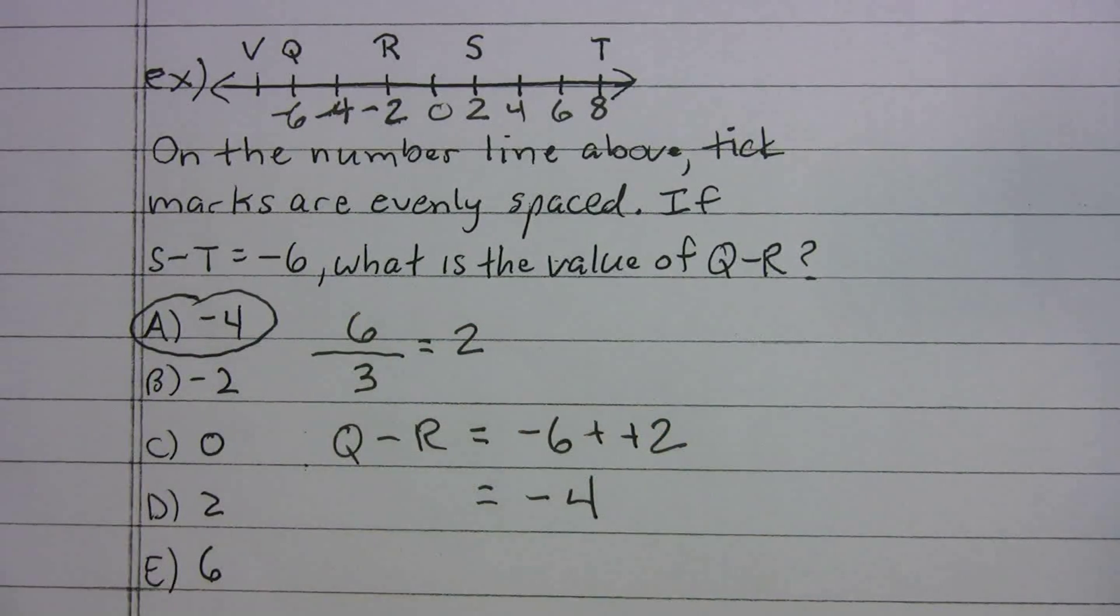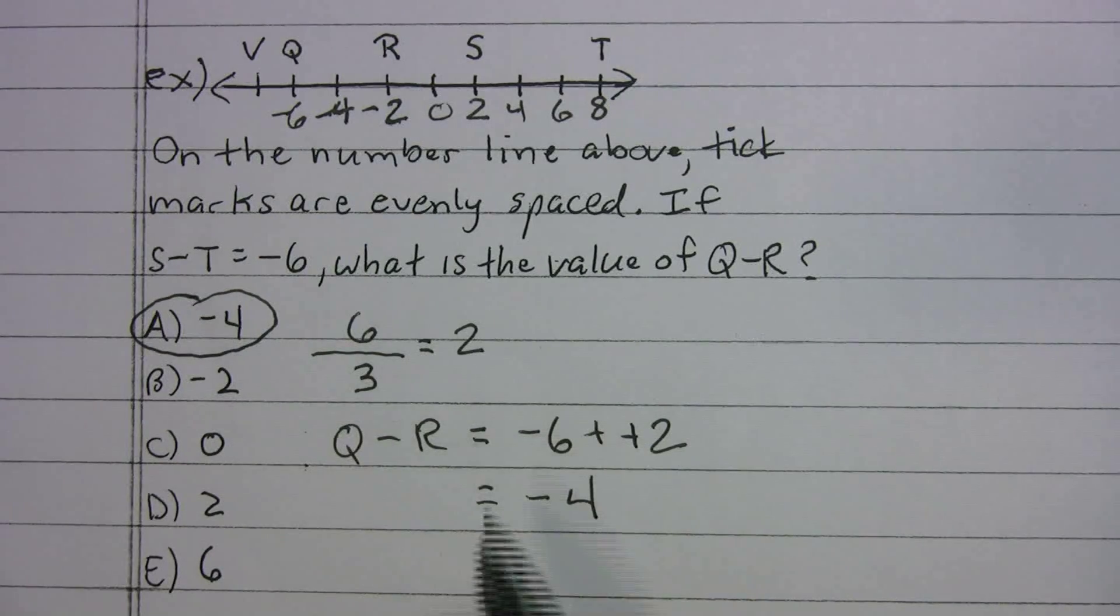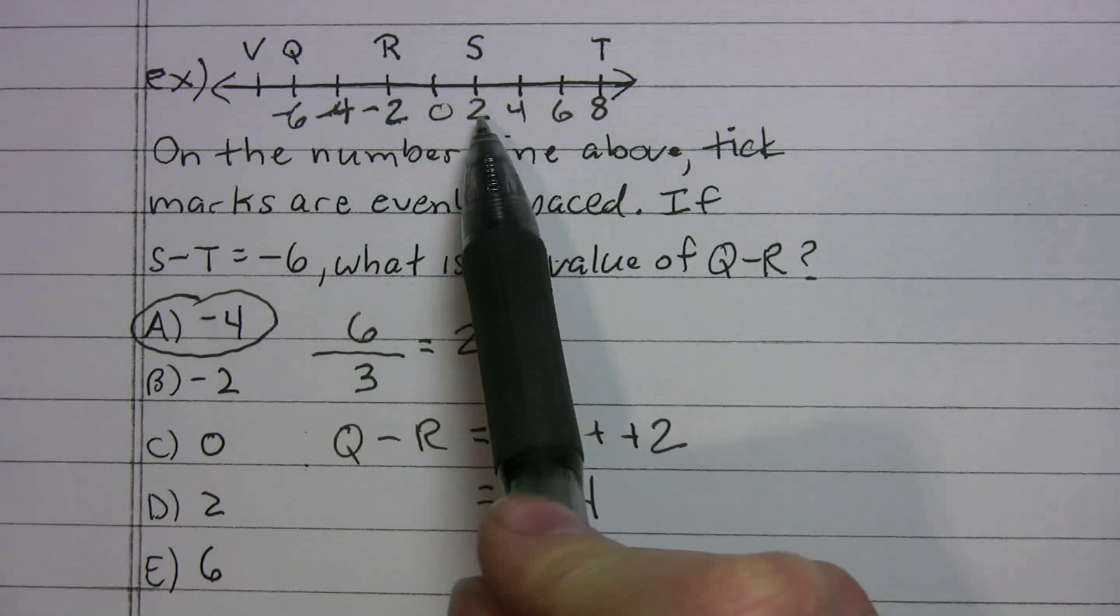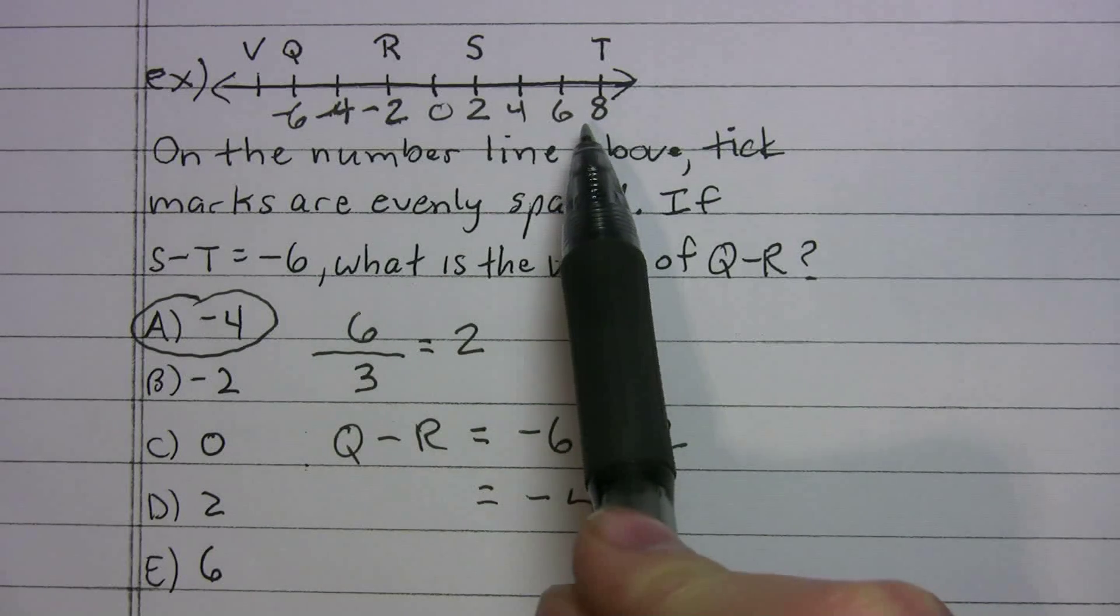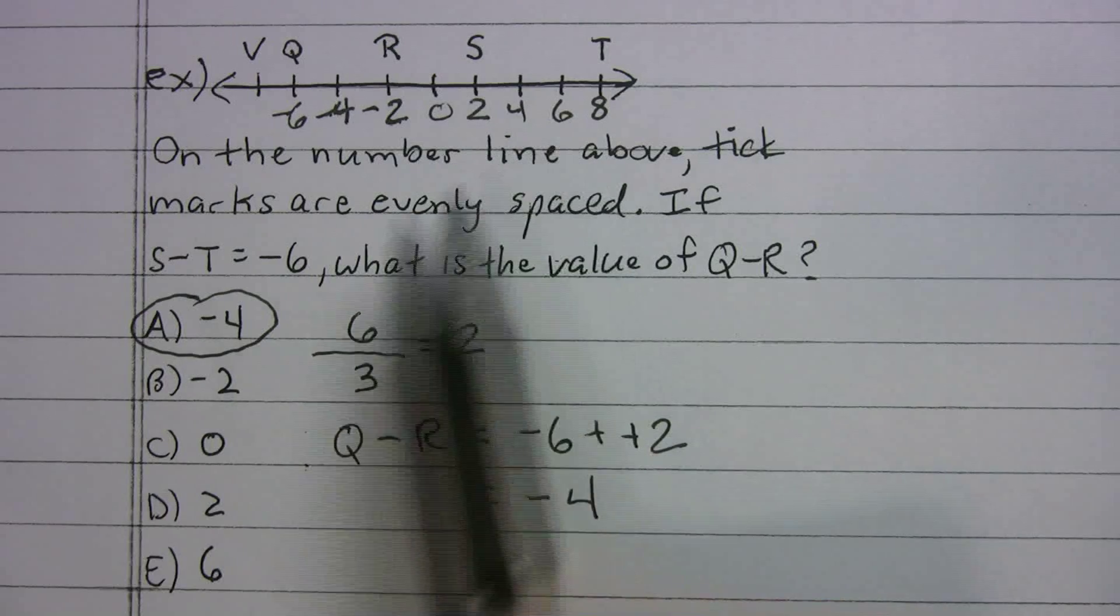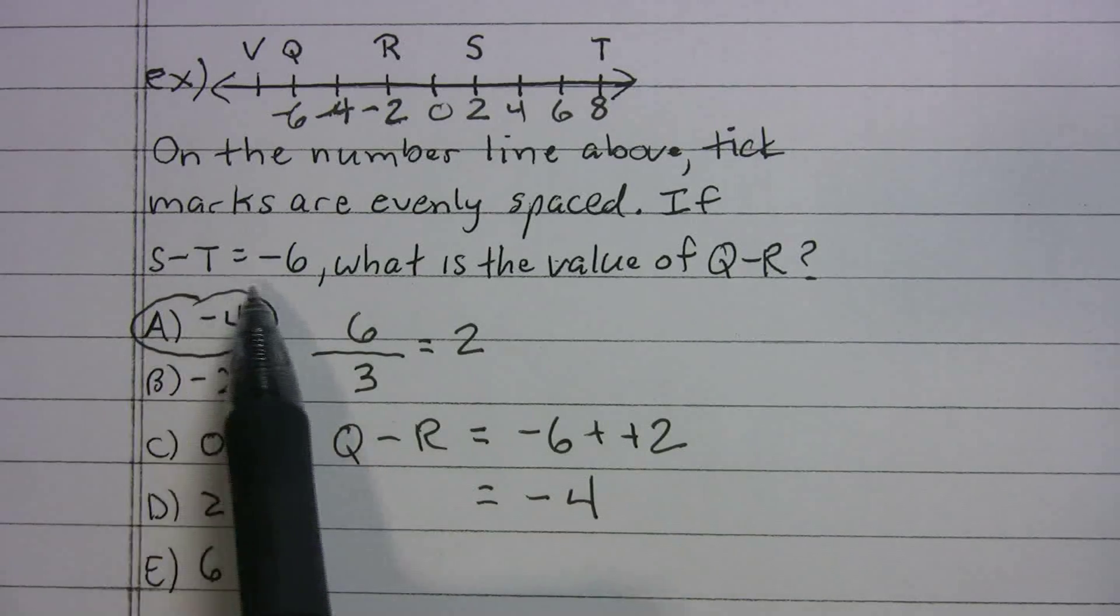And just to recap, the main thing here, if they don't give you numbers, choose your own numbers and plug them in. And even if you made s equal 10, what would t have to be? Well, t would be 16, right? 10 minus 16 is negative 6. So it really doesn't matter what numbers you pick as long as the problem makes sense and it works out.